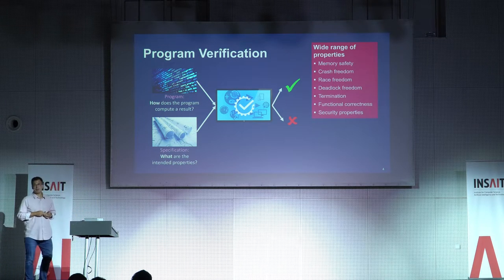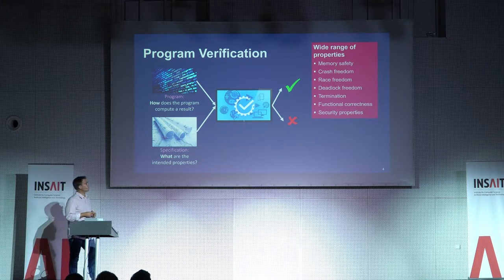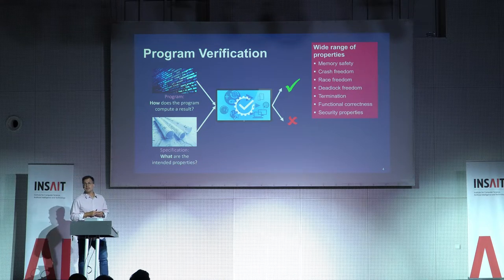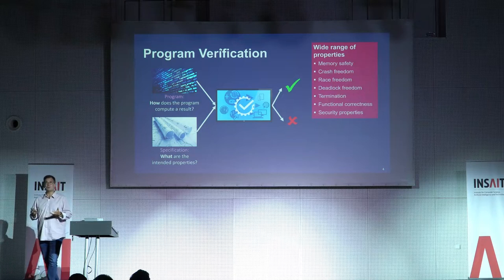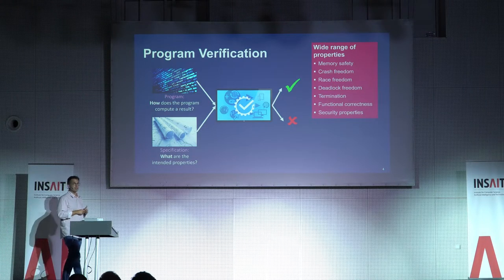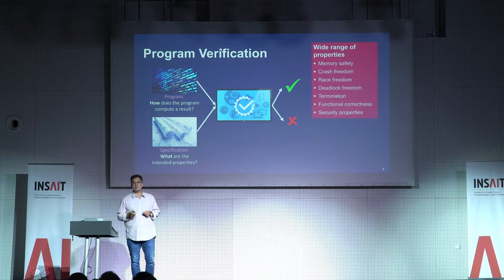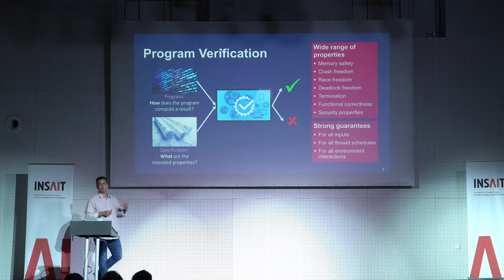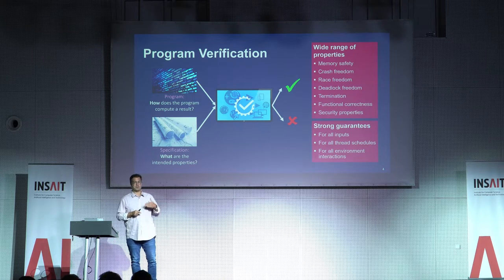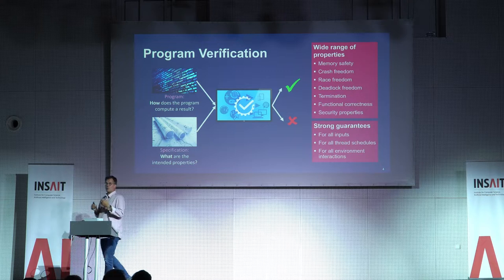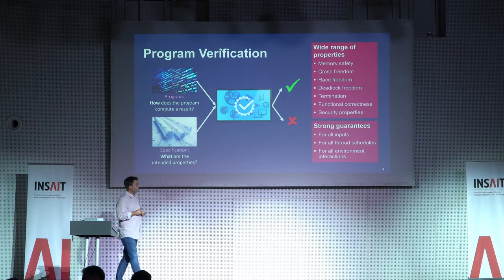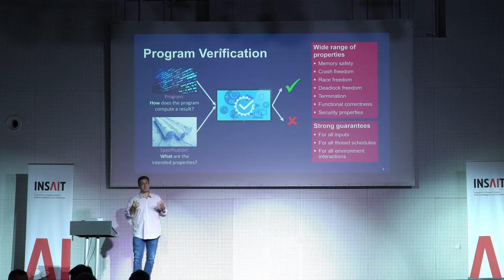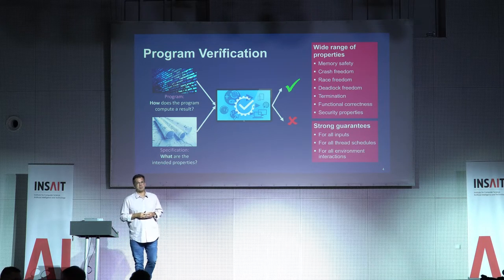Program verification can be applied to a very wide range of properties: memory safety and crash freedom, data race freedom and deadlock freedom in concurrent programs, termination as in the Zune example, functional correctness, and various security properties. The big advantage compared to other techniques is that it can give you extremely strong guarantees — not just running on a handful of tests, but providing a mathematical proof that the program satisfies the spec for all possible inputs, all possible thread schedules, or all possible interactions with the environment, including a potential attacker.